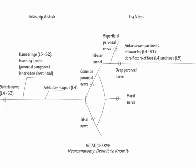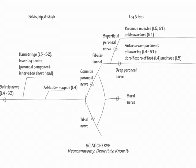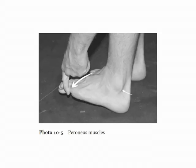Next, show the superficial peroneal nerve extend midway into the lower leg. Indicate it innervates the peroneus muscles; S1 is their major supplier. The peroneus muscles are peroneus longus, peroneus brevis, and peroneus tertius. Evert your foot to demonstrate the peroneus muscle group action. Block the outside of the foot to make this test easier.